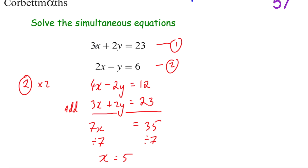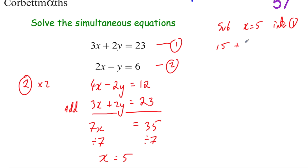Now we know what x is, we can substitute that into either equation 1 or equation 2 to find y. I'm going to substitute x = 5 into equation 1. So 3x means 3 times 5, which is 15. We've got 15 + 2y = 23. Now we've got an equation with just y's and numbers. We want to get y on its own, so let's take 15 away from both sides.